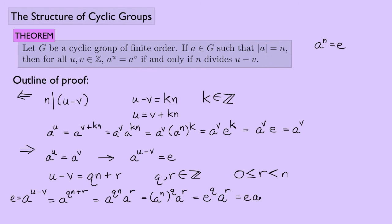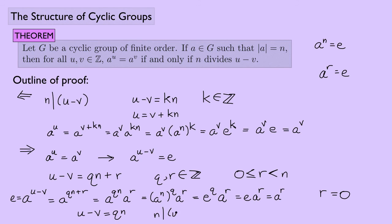So A^R = identity. But n is the least positive integer such that A^n = identity, so if A^R = identity then R cannot be a positive integer less than n — meaning R is not positive. Since R ≥ 0 by the division algorithm, we must have R = 0. Therefore U − V = Q·n, so n divides U − V.